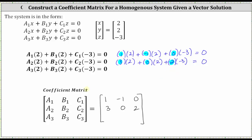For the last row, let's try not to let any coefficient be zero. Three times two is six, plus three times two is another six, giving a sum of twelve. So if we let c sub three equal four, we have four times negative three equals negative twelve, giving a total of zero. So if a sub three is three, b sub three is three, and c sub three is four: six plus six plus negative twelve equals zero. The third row in the coefficient matrix is three, three, four.